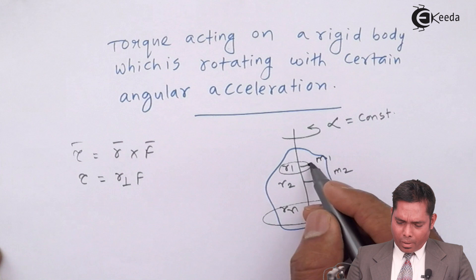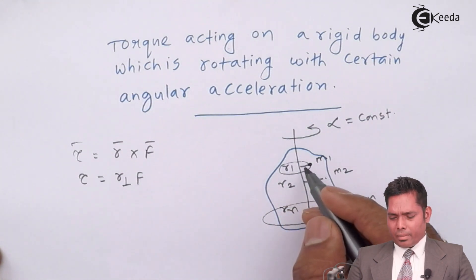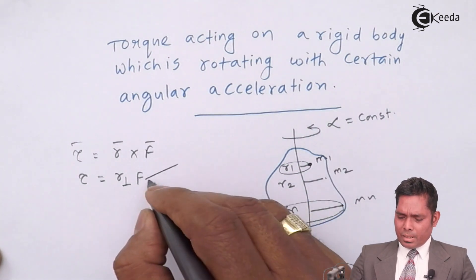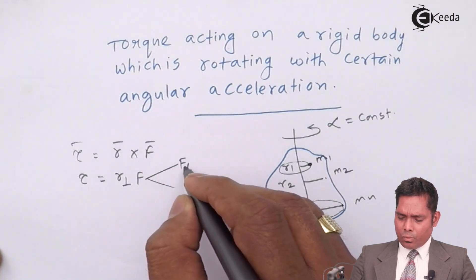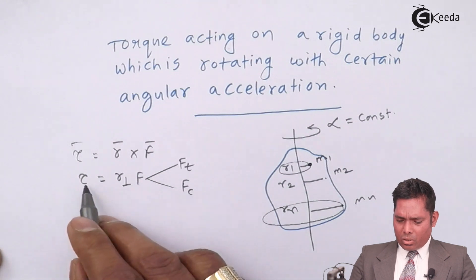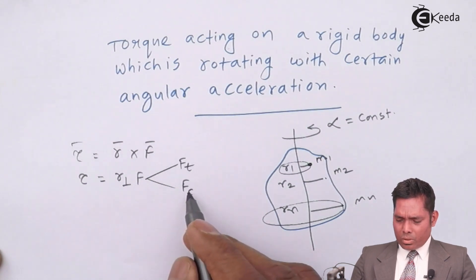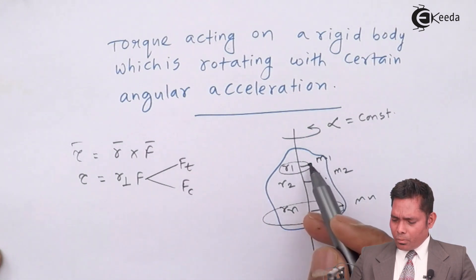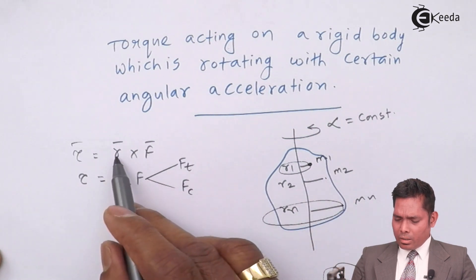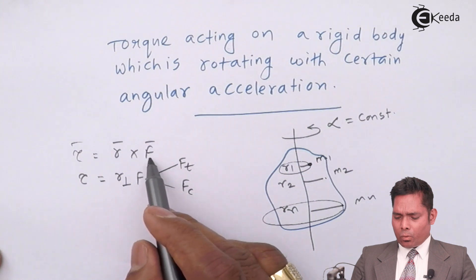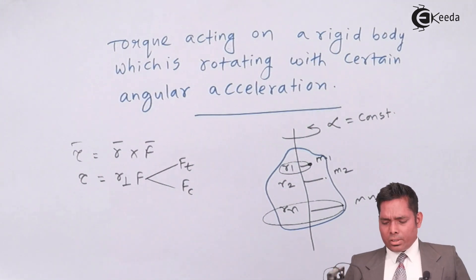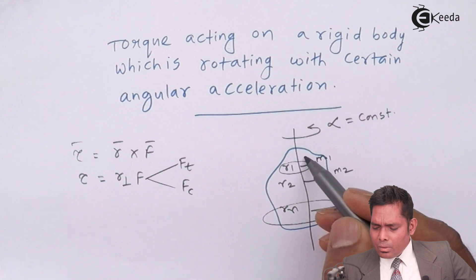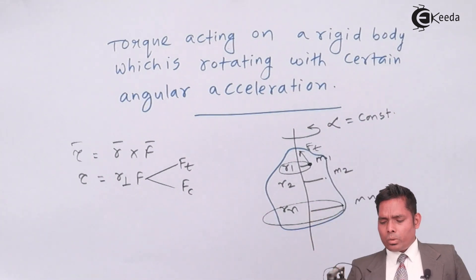In this case, because this particle is rotating, centripetal force is required and because it is having some alpha, that means tangential acceleration is also there. So this force is basically a combination of tangential force and centripetal force. But here the torque is not because of centripetal force, because r position vector and centripetal force are at 180 degrees to each other, sine 180 is 0. So there is no torque contribution due to this centripetal force. Only the tangential force which is acting here will have some role in producing the torque.